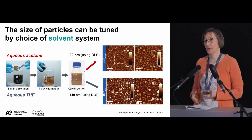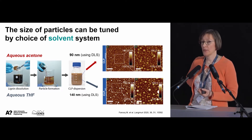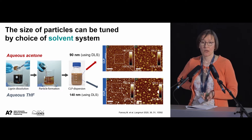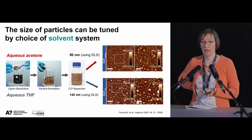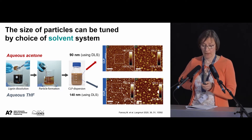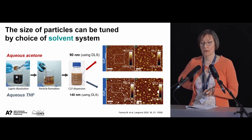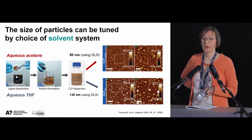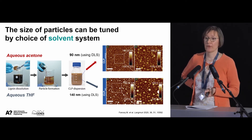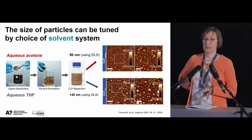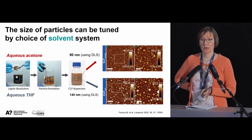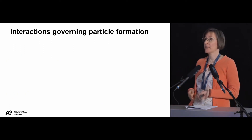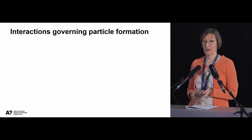Of course, you want to tune the particles. One easy way of tuning the size of the particles is by choosing the solvent system. We have used aqueous acetone and aqueous THF. We noticed that we get smaller particles if we use aqueous acetone as the solvent before precipitating the particles in water, compared to THF. But we were thinking - why is this? We wanted to look into this in more detail. And I would say this is all about the interactions in the system.